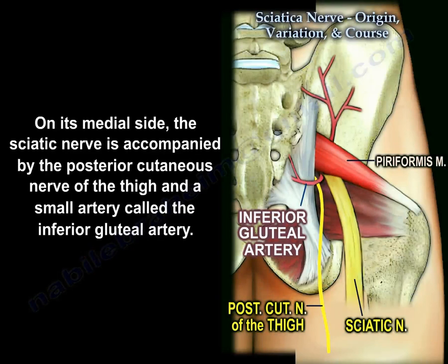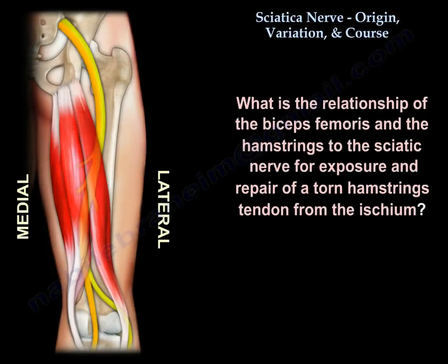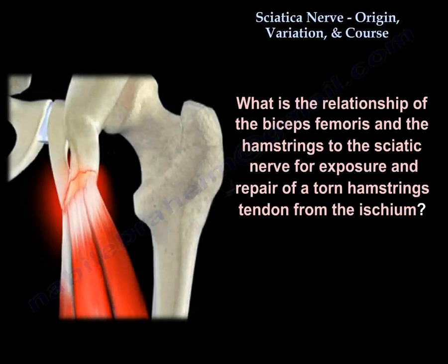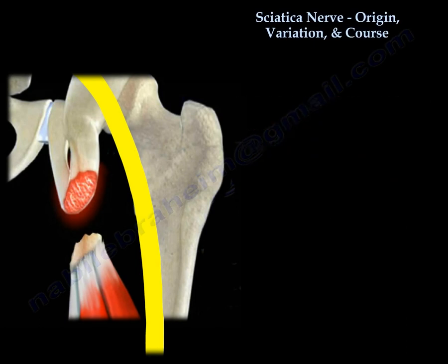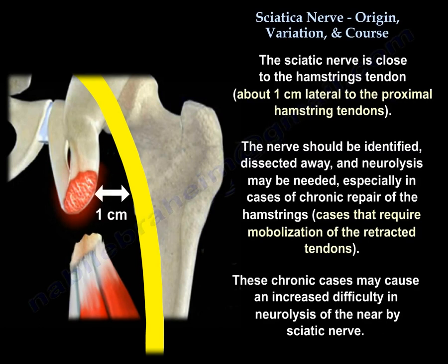On its medial side, the sciatic nerve is accompanied by the posterior cutaneous nerve of the thigh and a small artery called the inferior gluteal artery. Regarding the relationship of the biceps femoris and hamstring to the sciatic nerve: for exposure and repair of a torn hamstring tendon from the ischium, the sciatic nerve is close to the hamstring tendon — about one centimeter lateral to the proximal hamstring tendons. The nerve should be identified and dissected away, and neurolysis may be needed, especially in chronic cases requiring mobilization of retracted tendons, which can increase difficulty of neurolysis.